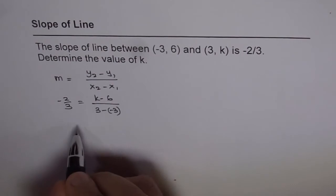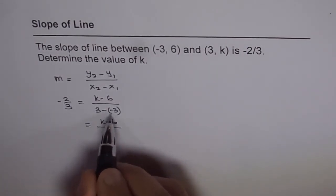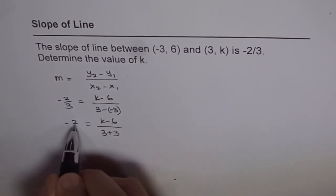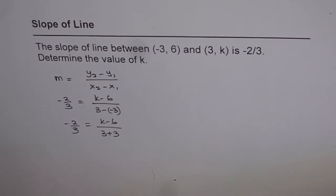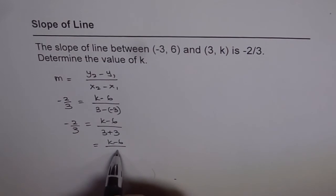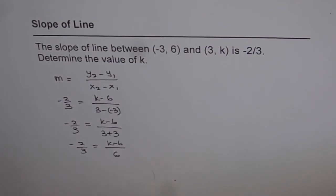So that gives us k minus 6 over 3 minus (-3) means 3 plus 3, correct? And we have -2/3 on the left side. Now this can be simplified further as k minus 6 over 6 equals -2/3. Now in this case we can just cross multiply and then solve for k.